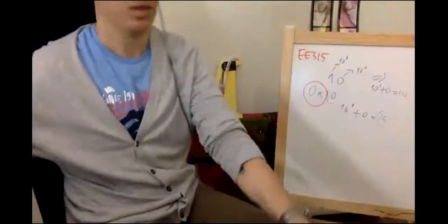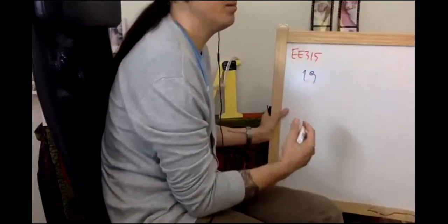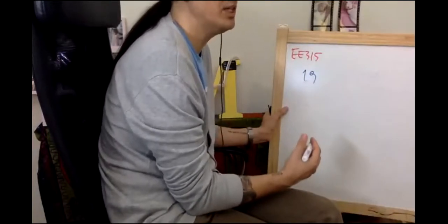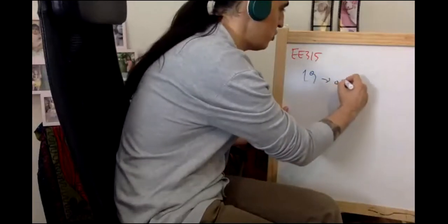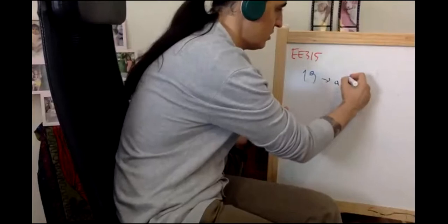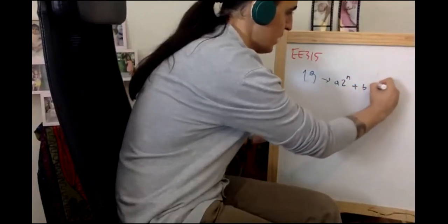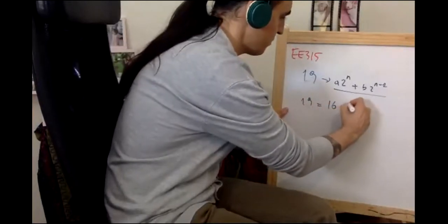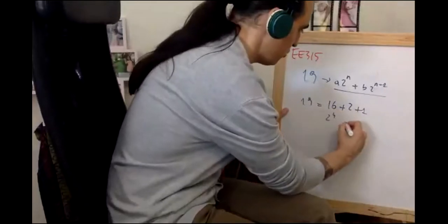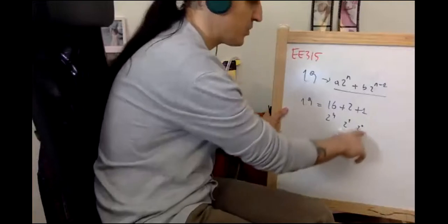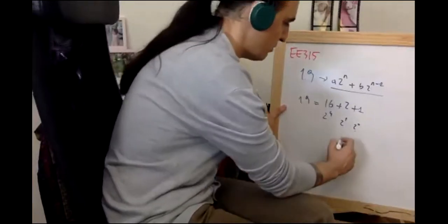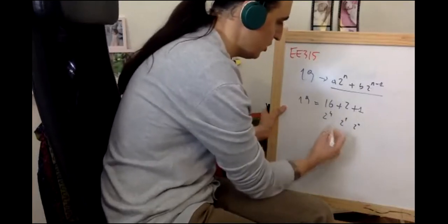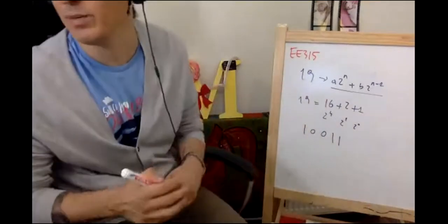Imagine you want to represent a number in base 2. Let me write the number 19. Representing a number in a base is factorizing it using the powers of that base. I'm trying to find something like a times 2 to the n plus b times 2 to the n minus 1. So 19 equals 16 plus 2 plus 1, which is 2 to the 4 plus 2 to the 1 plus 2 to the 0. That means bit 0 is 1, bit 1 is 1, bit 2 is 0, bit 3 is 0, bit 4 is 1.